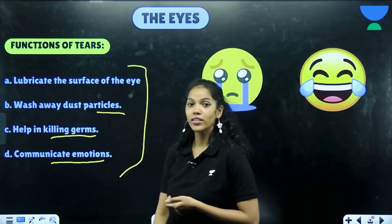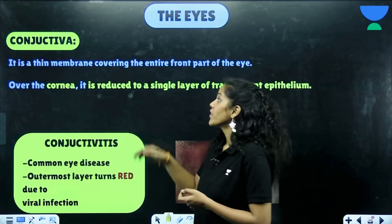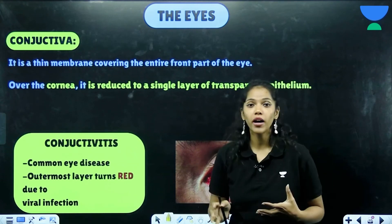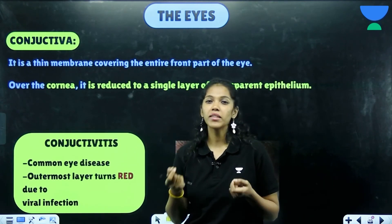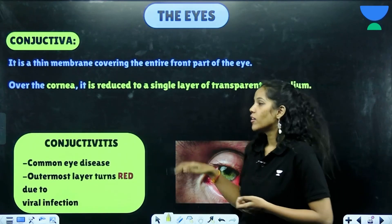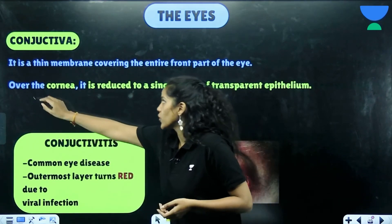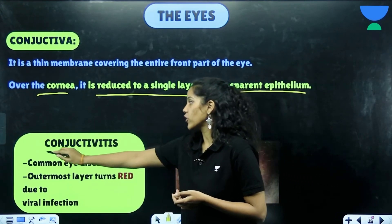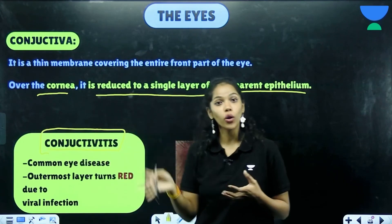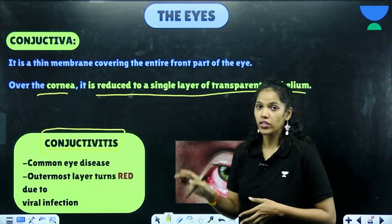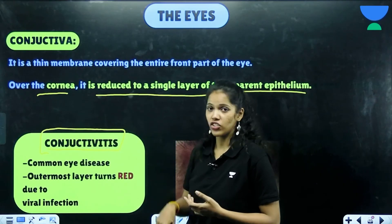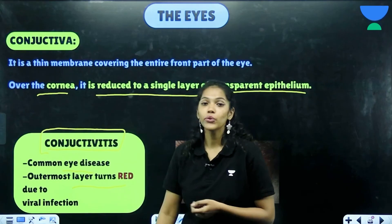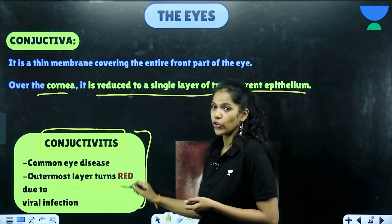Moving forward — the conjunctiva. The conjunctiva is a very thin membrane covering the entire front part of the eye; over the cornea it is reduced to a single layer of transparent epithelium. Conjunctivitis is the infection of the conjunctiva — it is a common eye disease where the outermost layer turns red due to a viral infection.